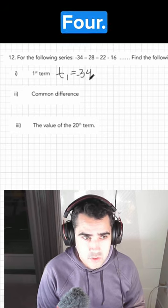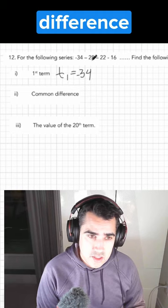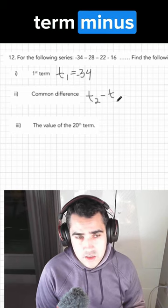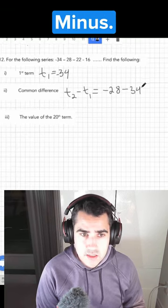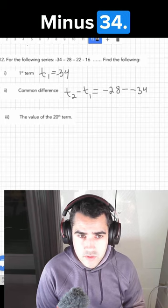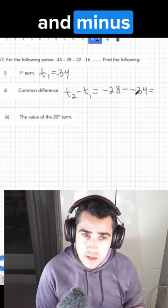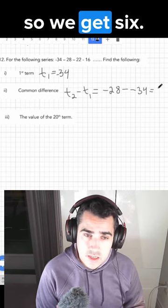The common difference, the second term minus the first term, which would be minus 28 minus minus 34, which minus and minus makes plus, so we get 6.